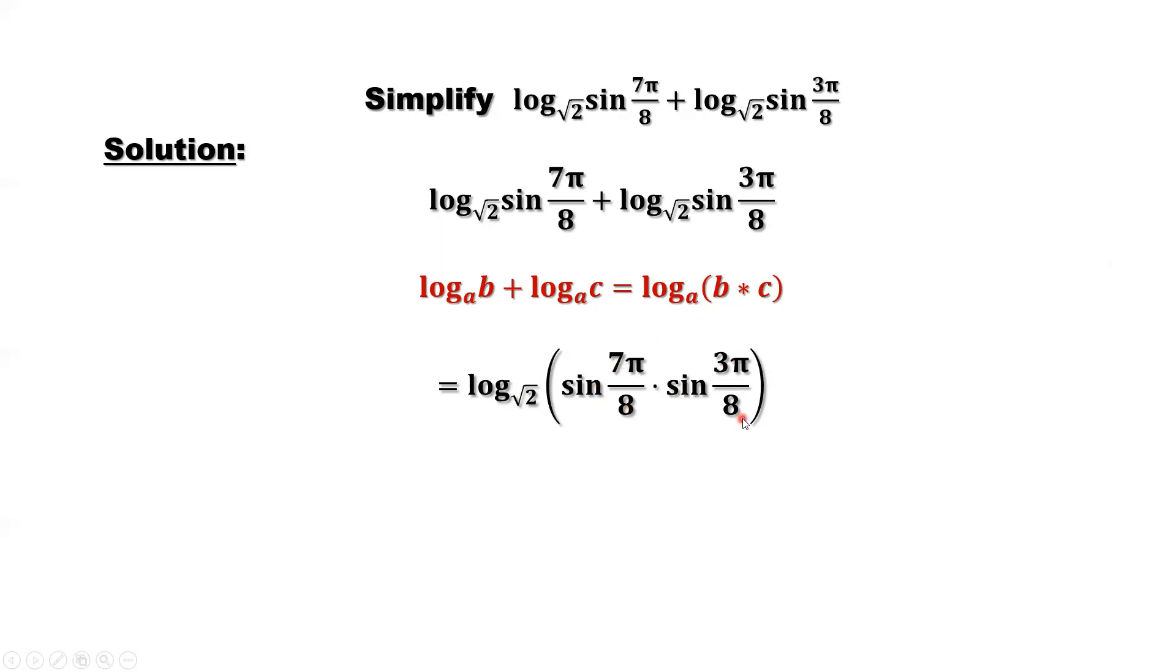What's next? Continue to simplify. What is this? 7π over 8, 3π over 8. We can rewrite them into the following. 7π over 8 equals π minus π over 8. 3π over 8 equals π over 2 minus π over 8. If you don't see this, you can see that's 4π over 8.